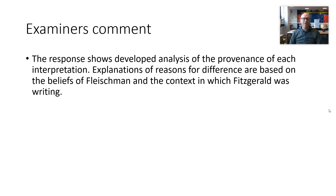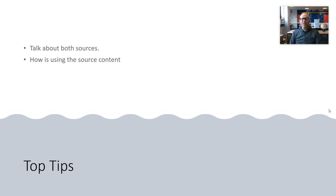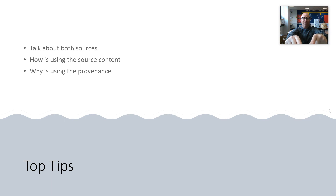Remember, if you're watching this video because it's been set as an interpretation question, you may not have this exact question — but the same skills apply for any interpretation question. You will be given two interpretations and asked how they're different and why they're different. Top tips: talk about both sources; for 'how', use the source content — what does it suggest and then find information that backs that up; for 'why', use the provenance. Hopefully this will help us become Bowman's Heaven History heroes when comparing and contrasting interpretations. See you soon.